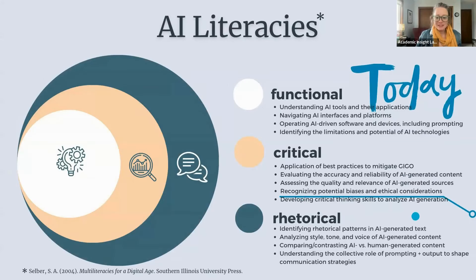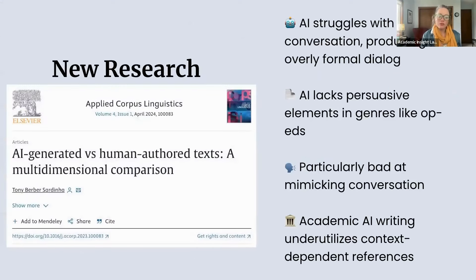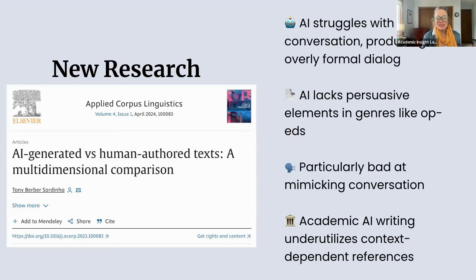Today I want us to talk about bias and ethical considerations related to some critical AI literacy. There was a new research article that just came out in my exact field — Applied Corpus Linguistics. The method used is called multidimensional analysis, a statistical method that looks at linguistic texts and their features. The author compared AI-generated versus human-authored text using GPT 3.5.